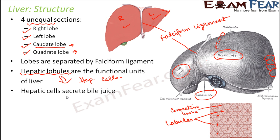These hepatic cells secrete bile juice. Bile juice is the one which plays an important role in the process of digestion. My objective here was not just to teach you the anatomy of the liver, but to tell you that the liver secretes bile juice — and it is the hepatic cells, the basic cells which form the liver, that secrete it.